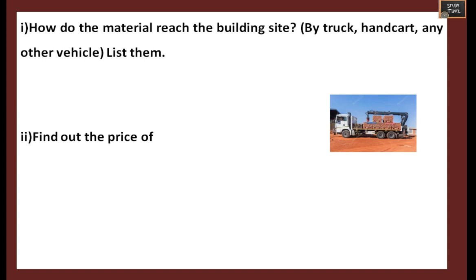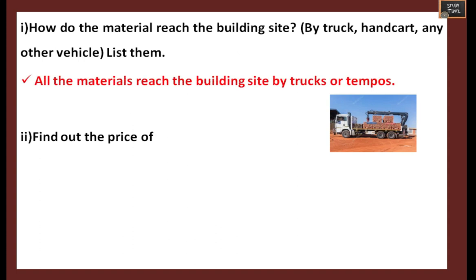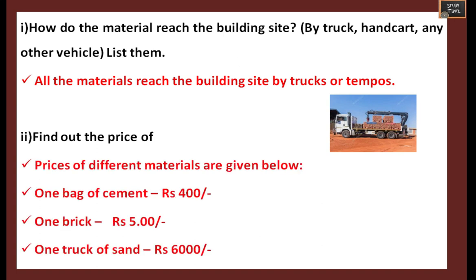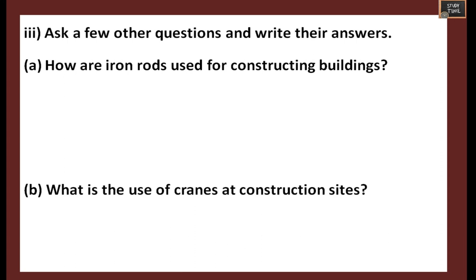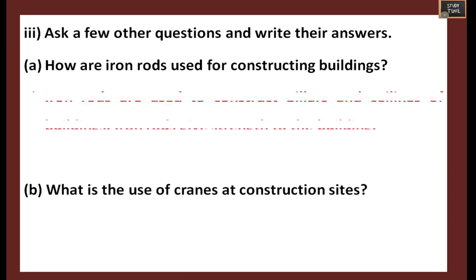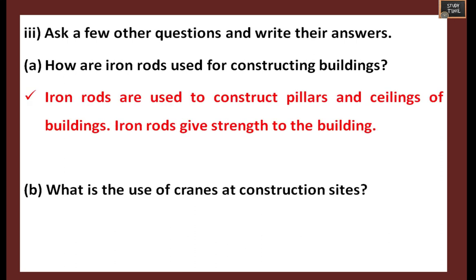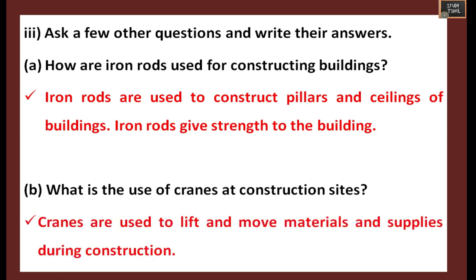How do materials reach the building site? By truck, tempo, handcart, or other vehicles. The price of one bag of cement might be around rupees 400 - it varies by place. One brick might be rupees 5, and one truck of sand might be rupees 6000 to 10,000. You can ask a few more questions: How are iron rods used? They give strength to the building. What is the use of cranes at a construction site? They are used to lift and move materials and supplies during construction.